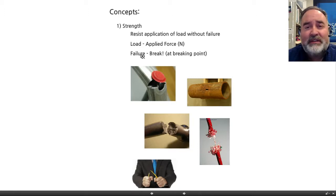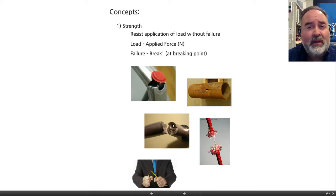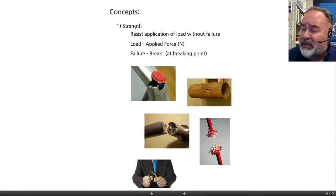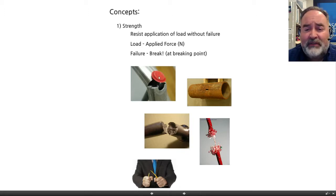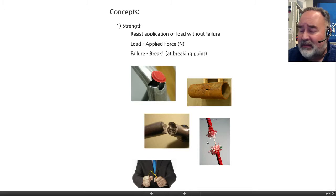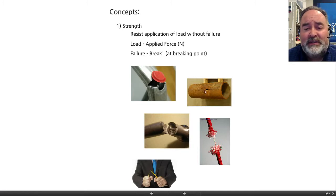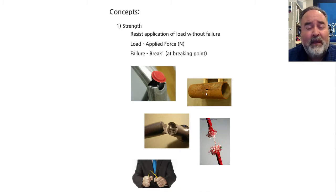I grabbed a bunch of images here of materials that have been forced until they have broken. This looks to be a piece of aluminum — maybe an aluminum tube with a rivet, like a lawn chair. This looks to be a pipe or a nail of some kind that has snapped. This is obviously a rope that is frayed. And down here, some guy snapping a pencil in half. The concept is pretty simple — a lot of what we'll talk about this semester are fairly straightforward concepts.